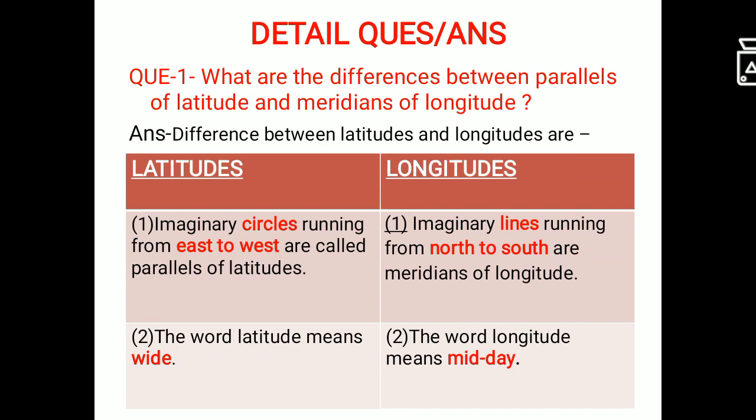So that means from north to south pole a straight line is coming. So longitudes are the lines coming from north to south and latitude are the circles running from east to west.